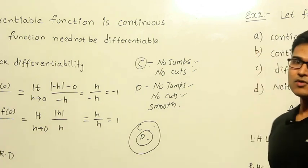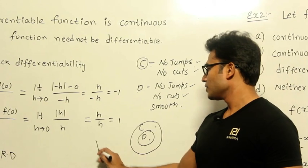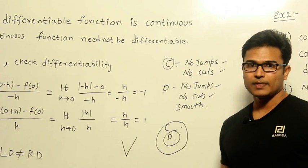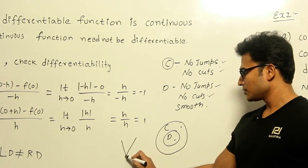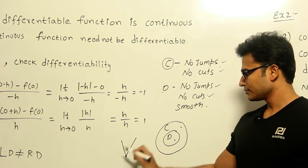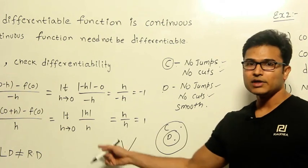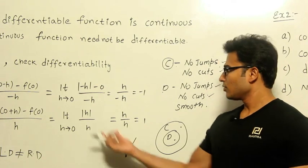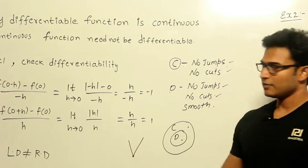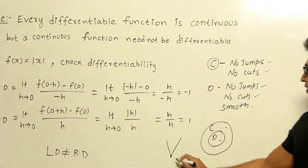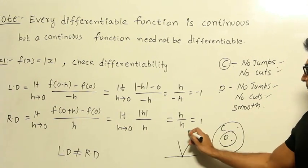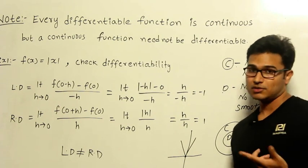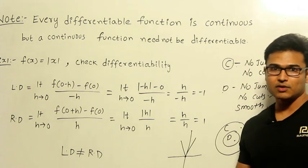Let's see one such example. If you have a graph like this for f(x), it is definitely continuous because there are no cuts and no holes, but it is not differentiable because at this corner point you cannot have a unique tangent. Therefore the slope of the tangent is not going to be unique. So for f(x) = |x|, at this corner point it is definitely continuous but not differentiable.